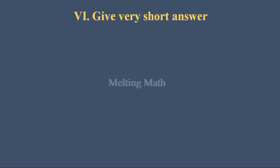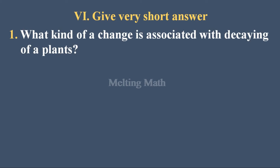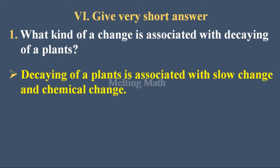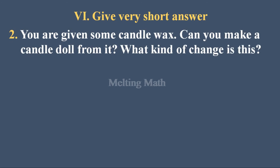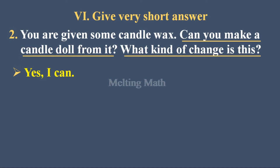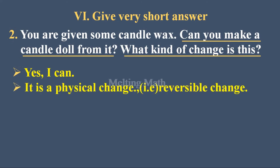Sixth section: Very short answers. Question one — what kind of change is associated with decaying of a plant? Decaying of a plant is associated with slow change and also chemical change, because there is some formation of a new substance. Question two — you are given some candle wax; can you make a candle doll from it? Yes, you can make a candle doll from it. What kind of change is that? Making a doll from candle wax comes under physical change and it's also a reversible change.